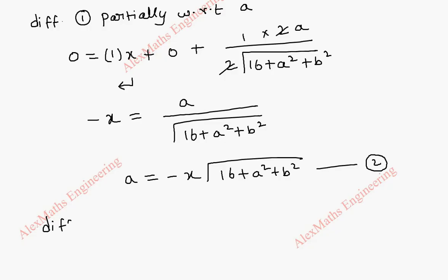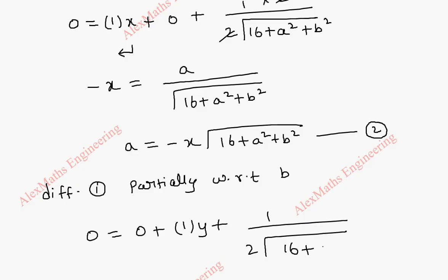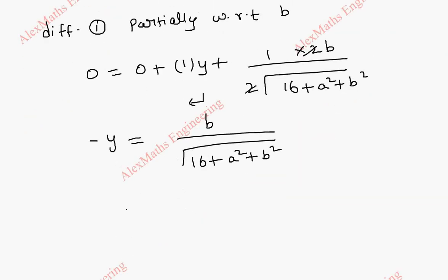In the same way, we differentiate equation 1 partially with respect to the constant b. The z differentiation is 0, ax differentiation is 0, and by differentiation gives y. The root differentiation is 1 by 2 root of 16 plus a square plus b square, multiplied by 2b. Cancelling and taking y to the other side, minus y equal to b by root of 16 plus a square plus b square. By cross multiplication, b equal to minus y root of 16 plus a square plus b square. Let's keep this as the third expression.